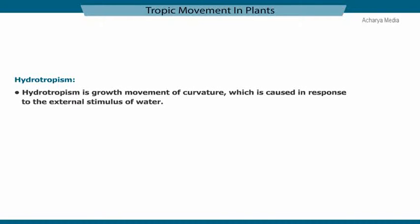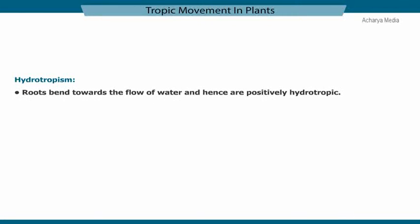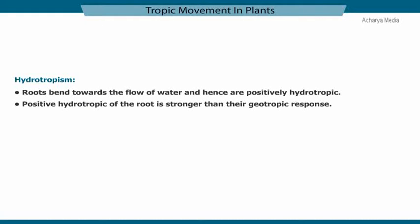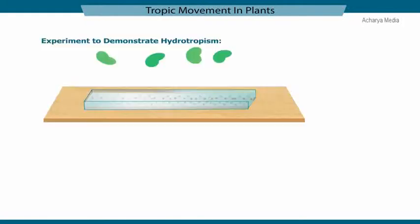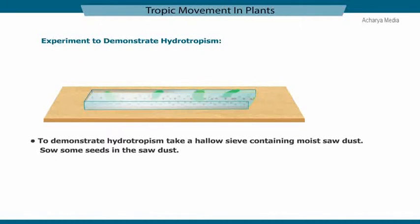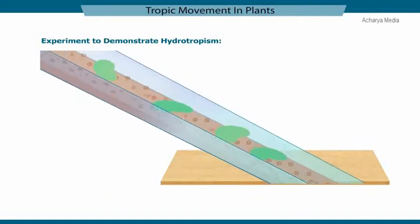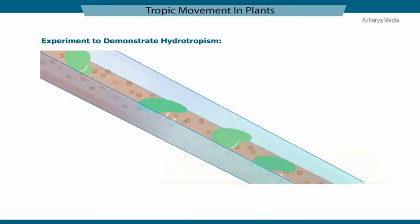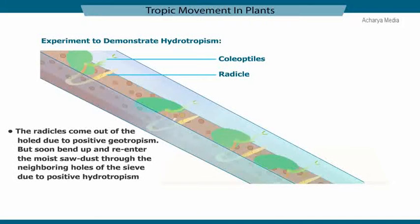Hydrotropism is a growth movement of curvature caused in response to the external stimulus of water. Roots bend towards the flow of water and are hence positively hydrotropic, and this positive hydrotropic response of roots is stronger than their geotropic response. To demonstrate hydrotropism, a hollow sieve containing moist sawdust with seeds is placed in a slanting position. After a few days, the radicles come out through the holes due to positive geotropism, but soon bend up and re-enter the moist sawdust through neighboring holes of the sieve due to positive hydrotropism.